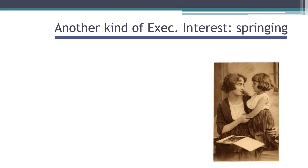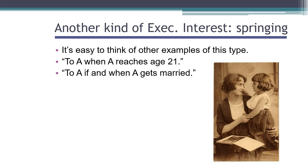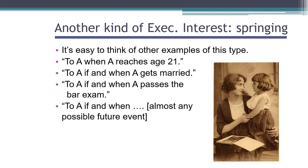This kind of springing executory interest can take many forms. It's easy to think of other examples: To A when A reaches age 21. To A if and when A gets married. To A if and when A passes the bar exam. Really, to A if and when almost any possible future event. All of those are good examples of a springing executory interest.